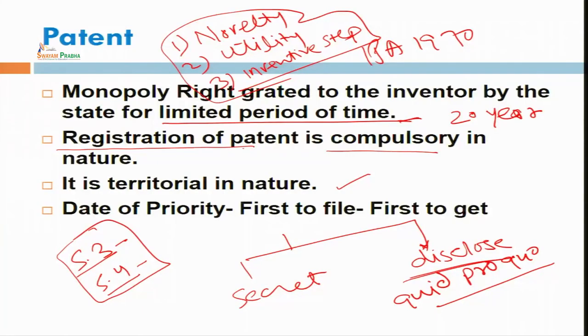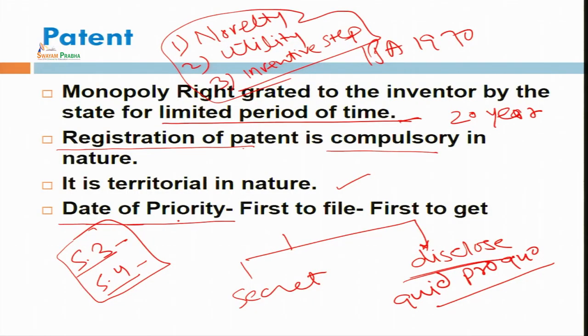Under registration of patent, the inventor has to fill Form 1, which is a request for registration of patent. He can also file with that a provisional specification. This patent principle is based on the principle of date of priority. The date of priority is determined from the date of filing of the patent, which is the most important thing. The inventor just needs to file the patent with the title and an abstract of the invention he has created.